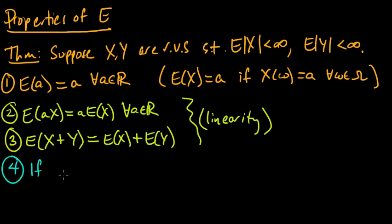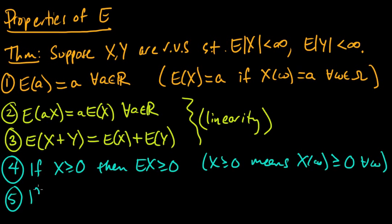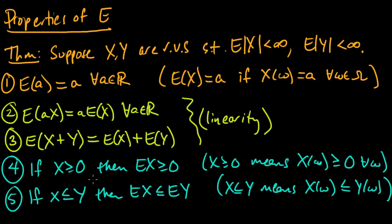Property 4: if X is greater than or equal to 0, then its expected value is also greater than or equal to 0. Here, X is a function, so X ≥ 0 means that for every omega, X(omega) ≥ 0 — element-wise. Closely related, property 5: if X is less than or equal to Y (element-wise, for all omega), then its expected value is less than or equal to the expected value of Y. This could be called the order-preserving property of expectation.